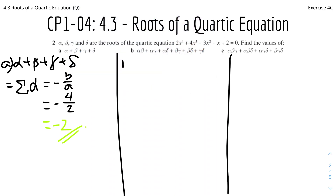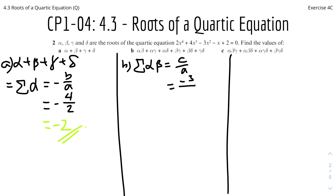Part b: alpha·beta + alpha·gamma + alpha·delta + beta·gamma + beta·delta + gamma·delta. This is the sum of the product of pairs, written as the sum of alpha·beta, and this equals c/a. From the original equation, c is -3 and a is 2, so therefore this is -3/2.